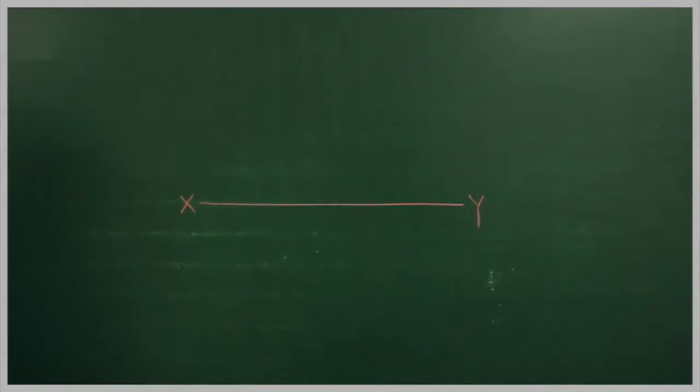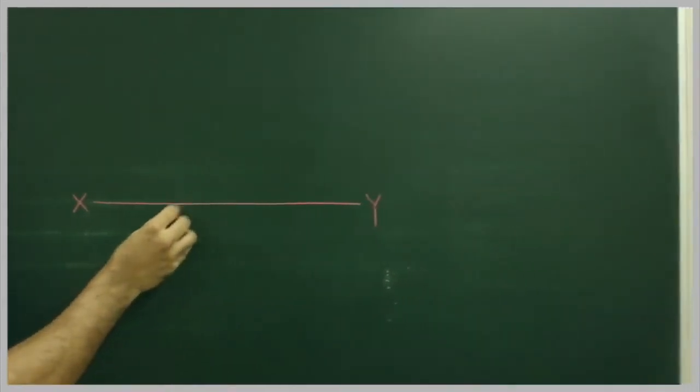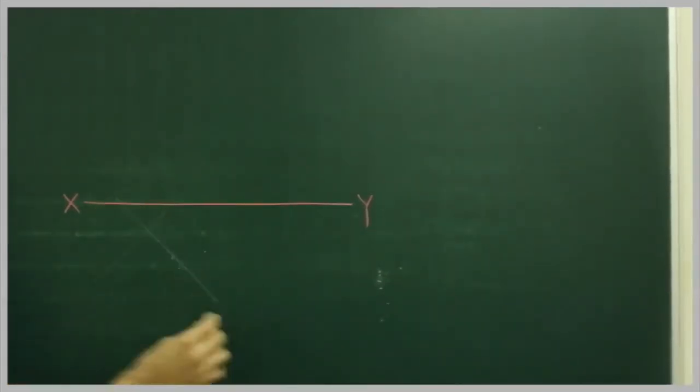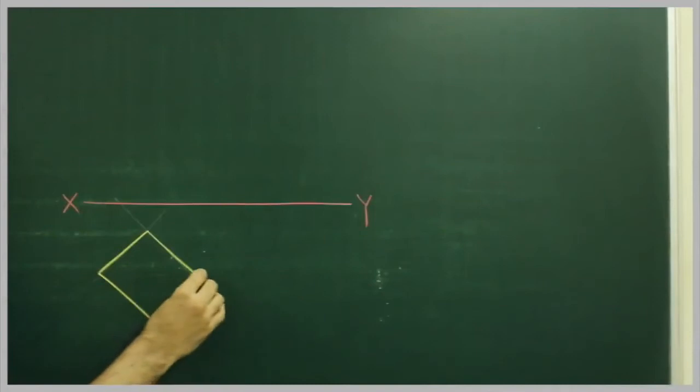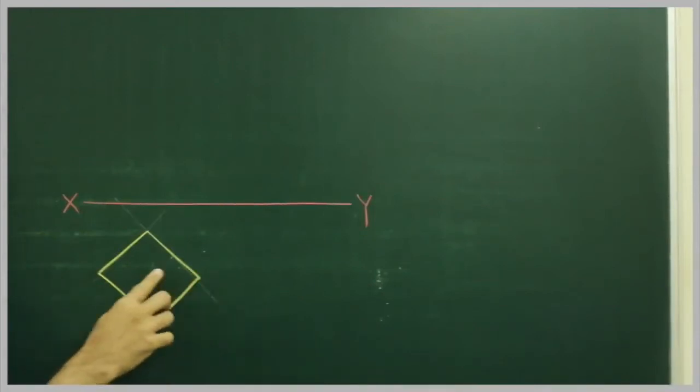A square plane ABCD of 30mm size is resting on one of its corners A on HP. So what we will do, first we will draw the square and it is resting on one of its corners on HP, A.